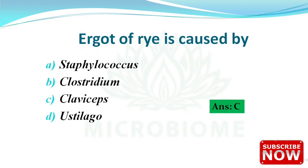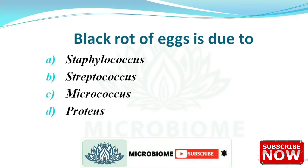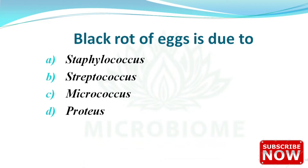Claviceps purpurea is a fungus whose sclerotia contain ergotoxin and related alkaloids that stimulate smooth muscle. Next: black rot of egg is due to which organism? The options are Staphylococcus, Streptococcus, Micrococcus, and Protease. The right answer is option D — Protease.